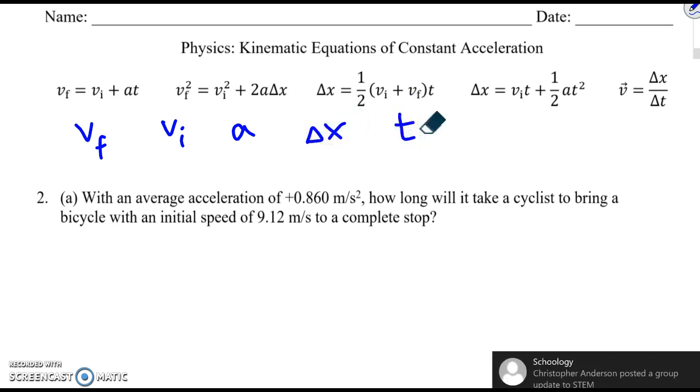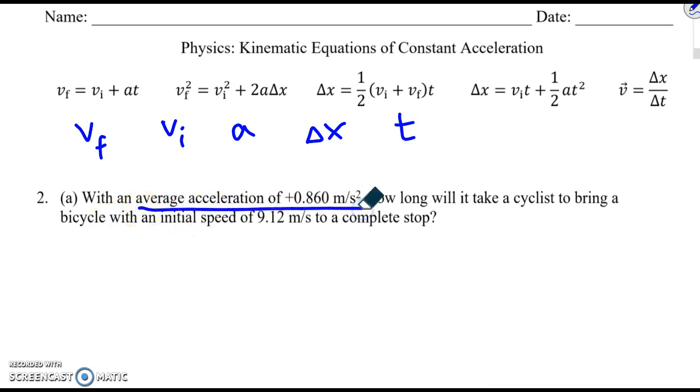Let's read the question and see which ones we've been provided. With an average acceleration of 0.860 meters per second squared, how long will it take a cyclist to bring a bicycle with an initial speed of 9.12 meters per second to a complete stop? So what's this value? Well, the unit is meters per second squared, so that must be the acceleration.